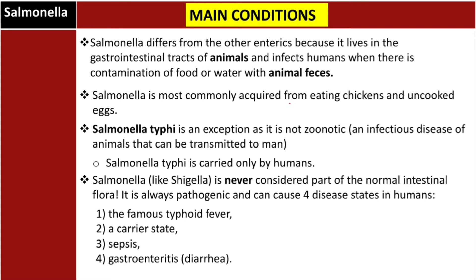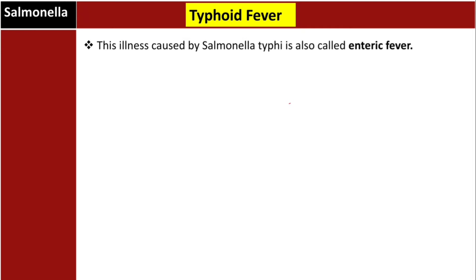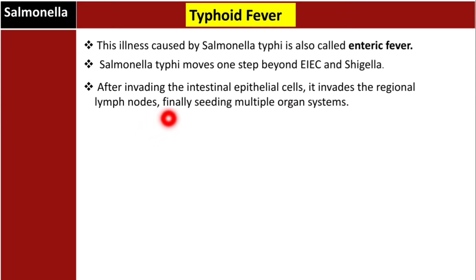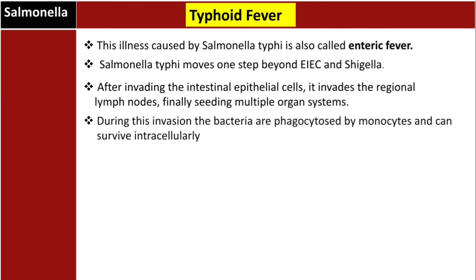Salmonella causes four main conditions in humans: typhoid fever, carrier state, sepsis, and gastroenteritis. Typhoid fever, caused by Salmonella typhi, is also called enteric fever. Salmonella typhi goes one step beyond enteroinvasive E. coli and Shigella — after invading the intestinal epithelial cells, it invades the regional lymph nodes and seeds multiple organ systems. During this invasion, the bacteria are phagocytosed by monocytes and can survive intracellularly, making Salmonella typhi a facultative intracellular parasite.